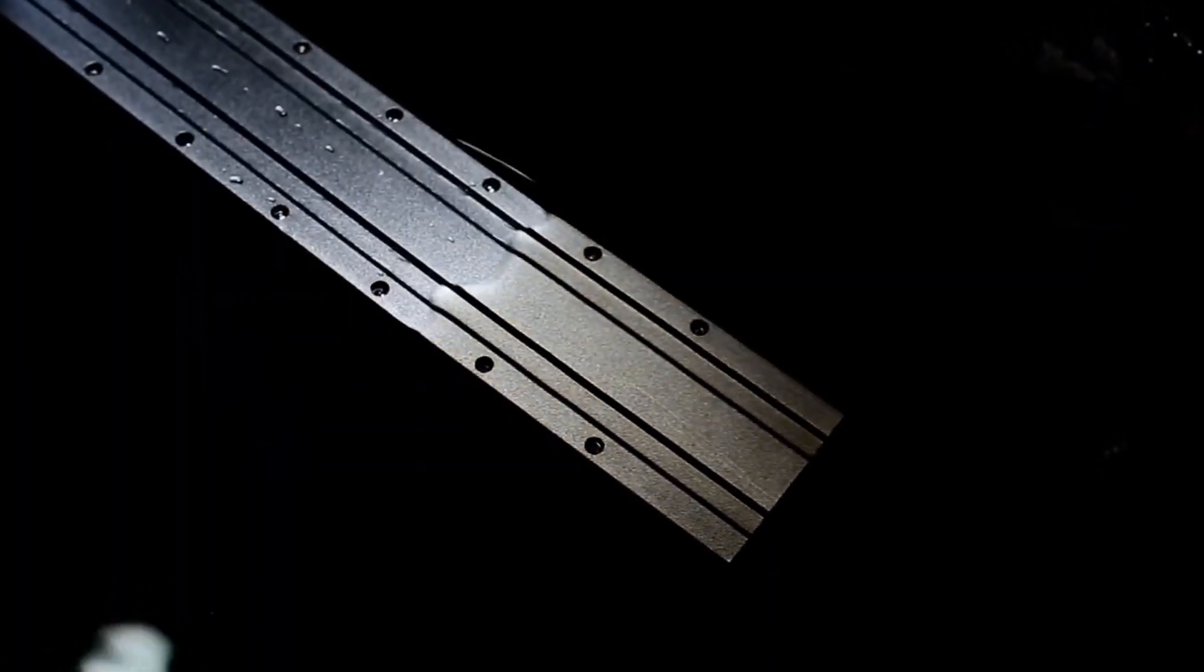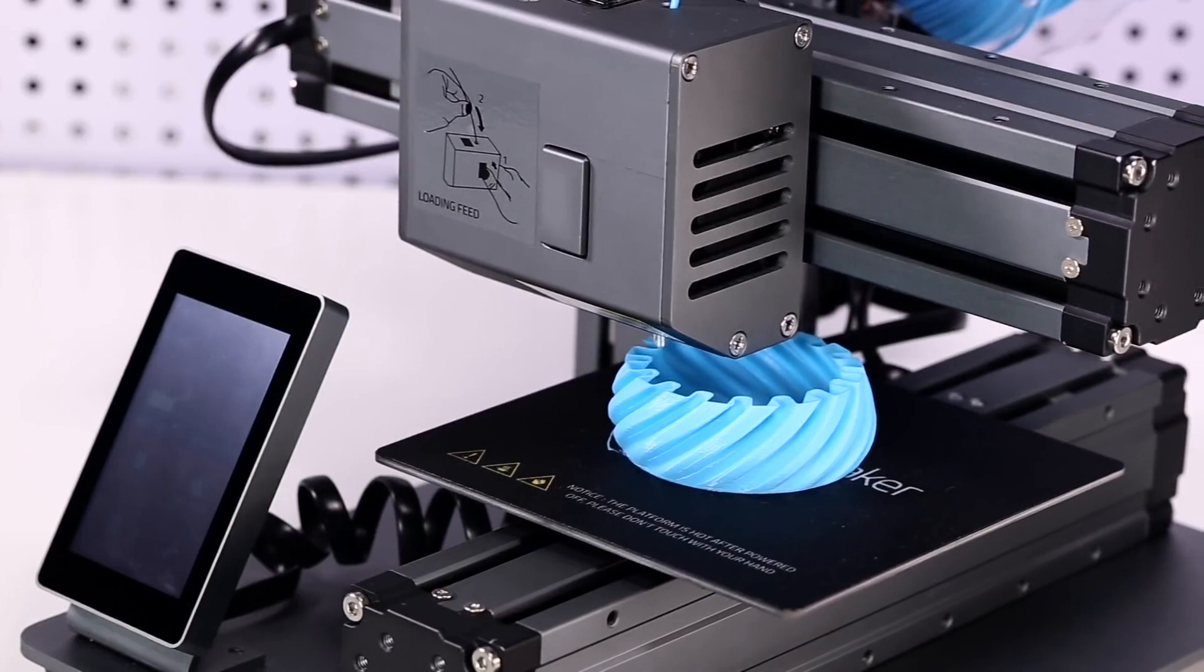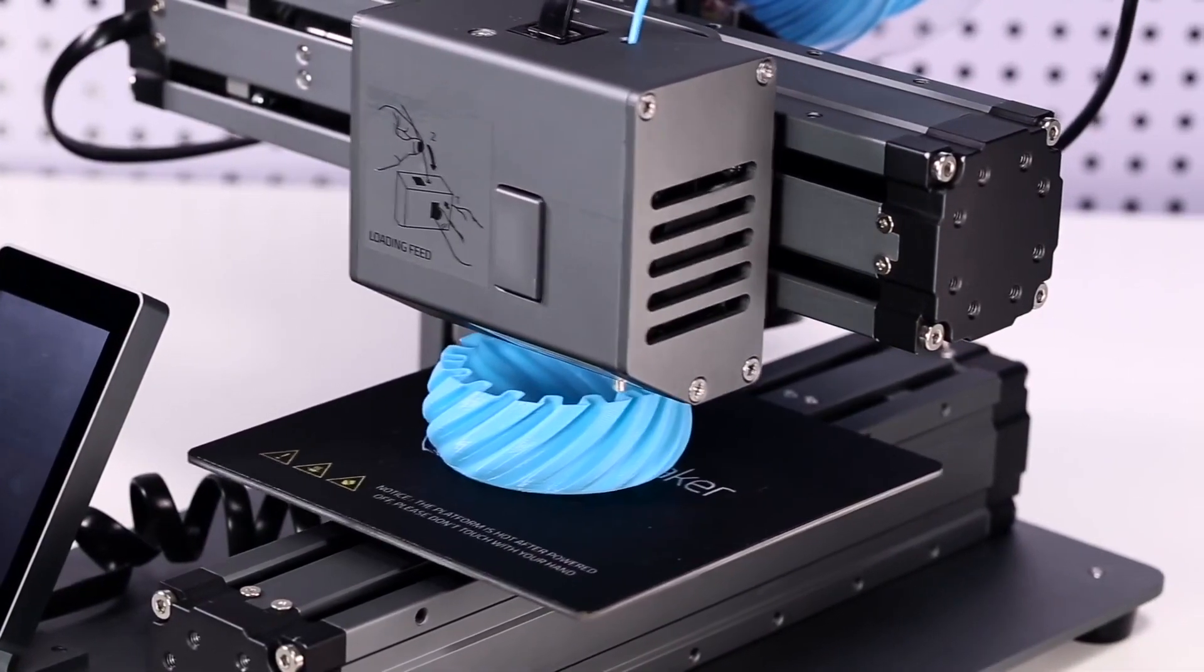Then they go through the anodized process to obtain a protective oxide layer. The all-metal designed Snapmaker focuses on every detail to consistently deliver the very best result.